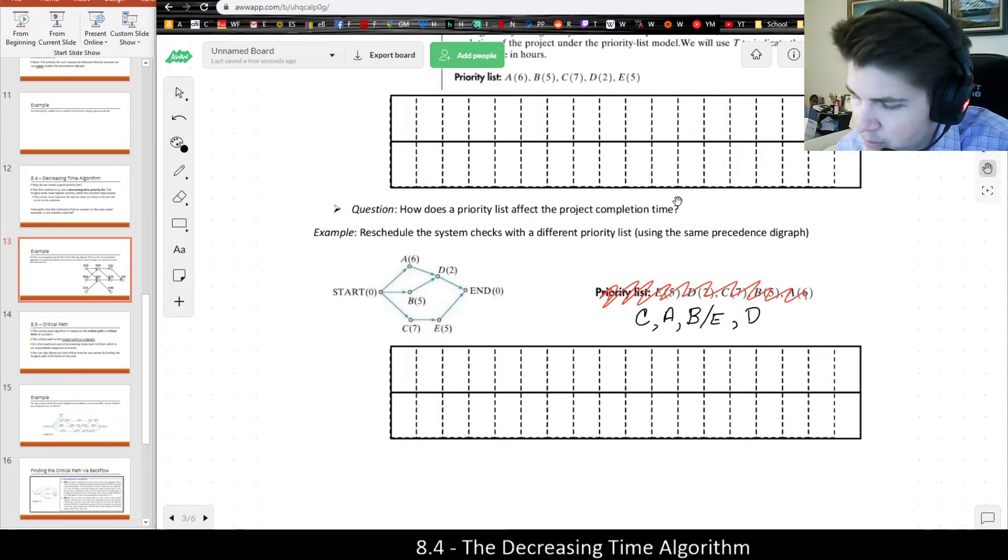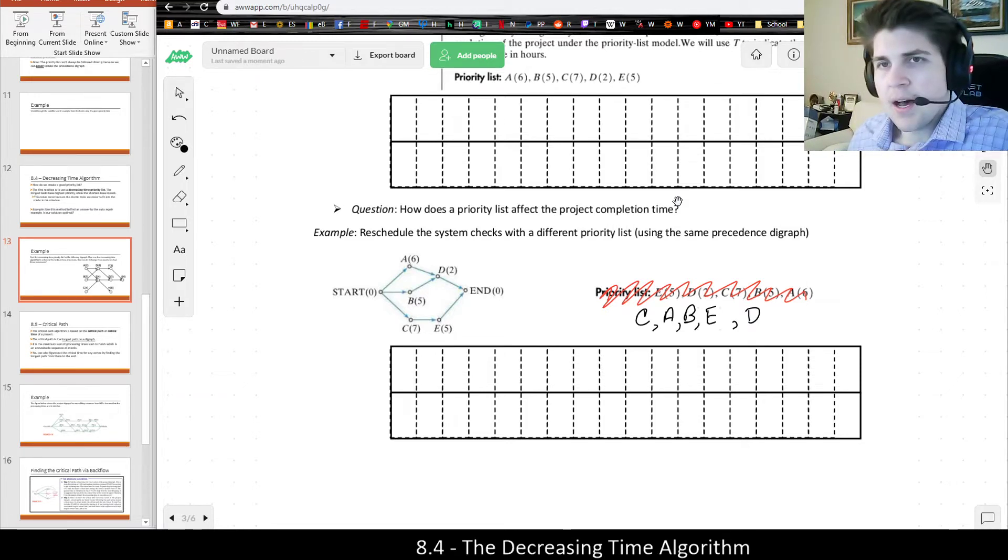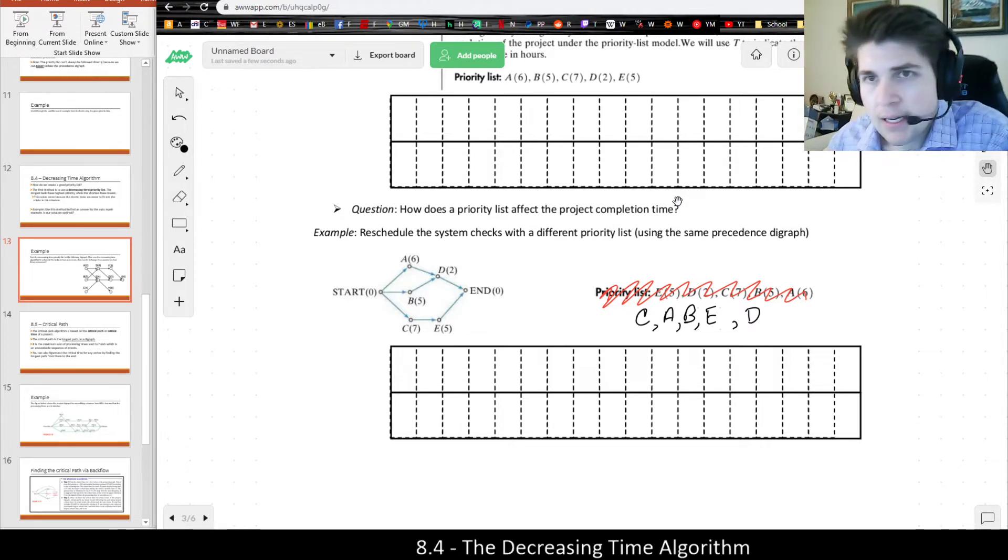Let's go ahead and put B in front of E because I don't want to do anything unorthodox. Usually I would suggest putting the tasks which are further forward in the digraph, further to the left first and later ones second. That's why I would do B over E.